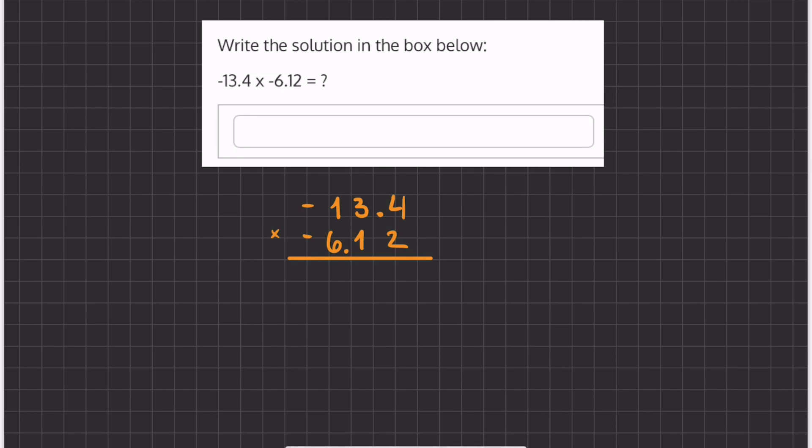In this problem we are multiplying two decimals by one another, and when we're multiplying decimals, it doesn't matter where our decimal is, we want to line up all of our numbers accordingly. When we're multiplying, we have to pay attention that we're multiplying a negative by a negative, which will give us a positive. So we're going to get back to that with our final answer, but right now we're going to pretend like we don't have negatives.